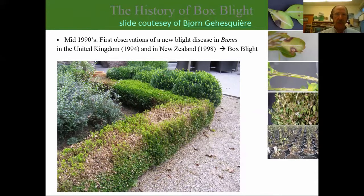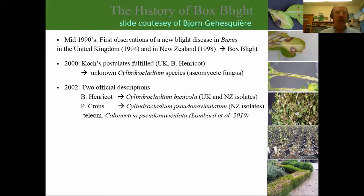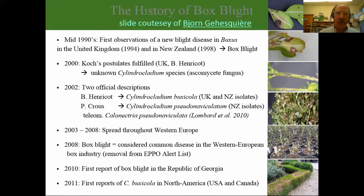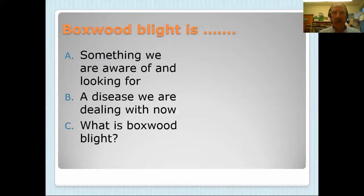Boxwood blight affects both nurseries and landscapes. It has gotten so bad in England that they have a hard time growing English boxwood there and are considering replacement plants such as a small-leaf holly with similar growth characteristics. The disease moved into the Republic of Georgia in 2010, and in 2011 it hit North America, including Oregon and nurseries in British Columbia.